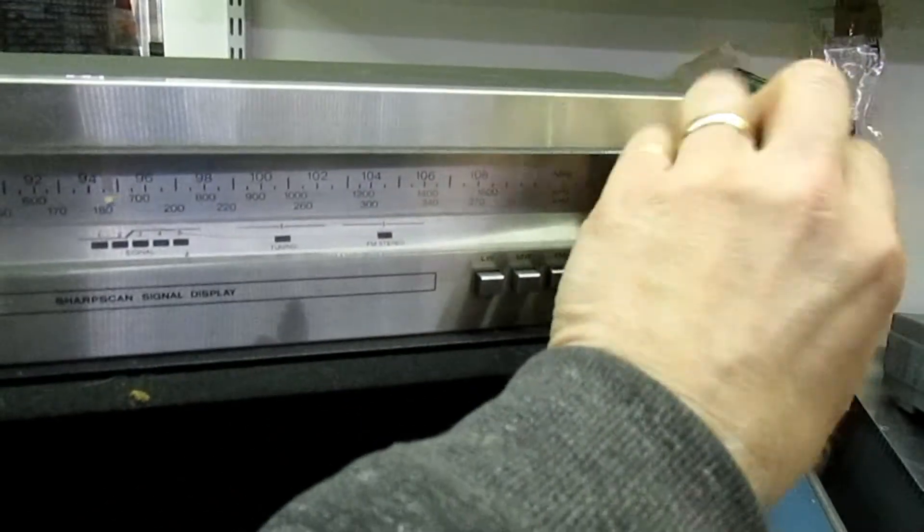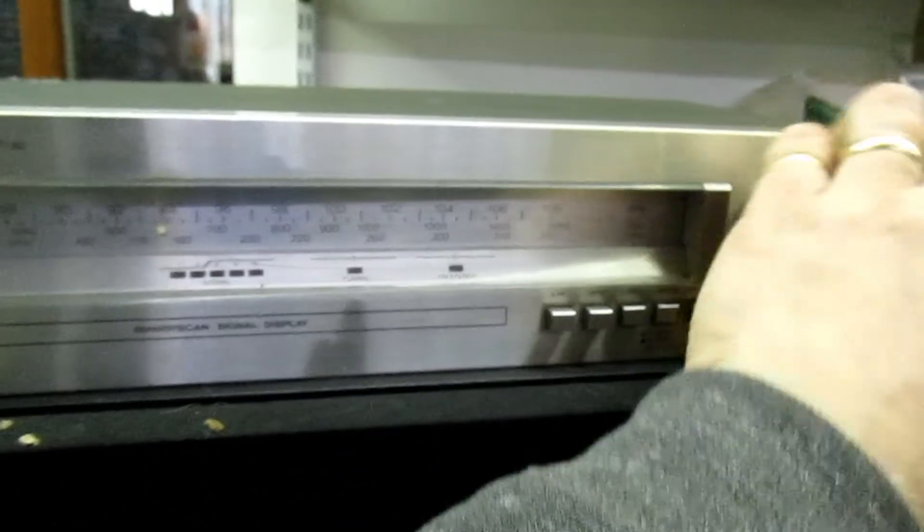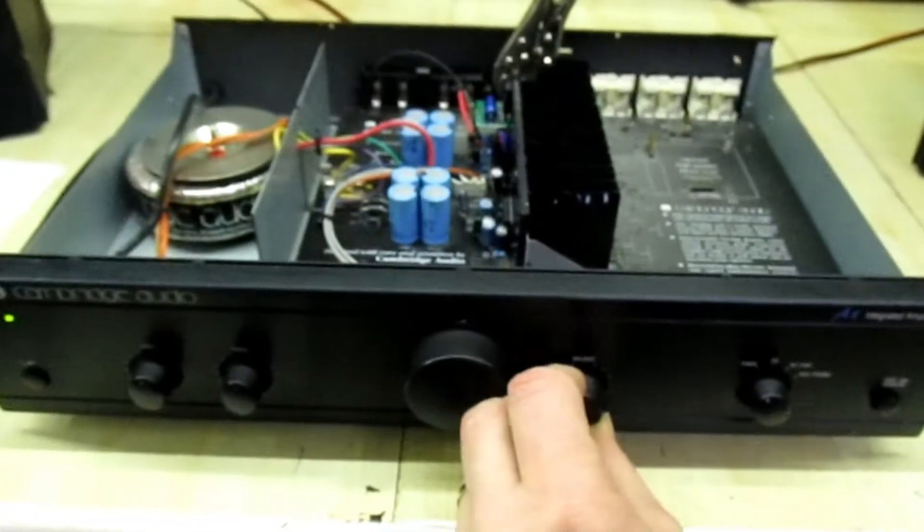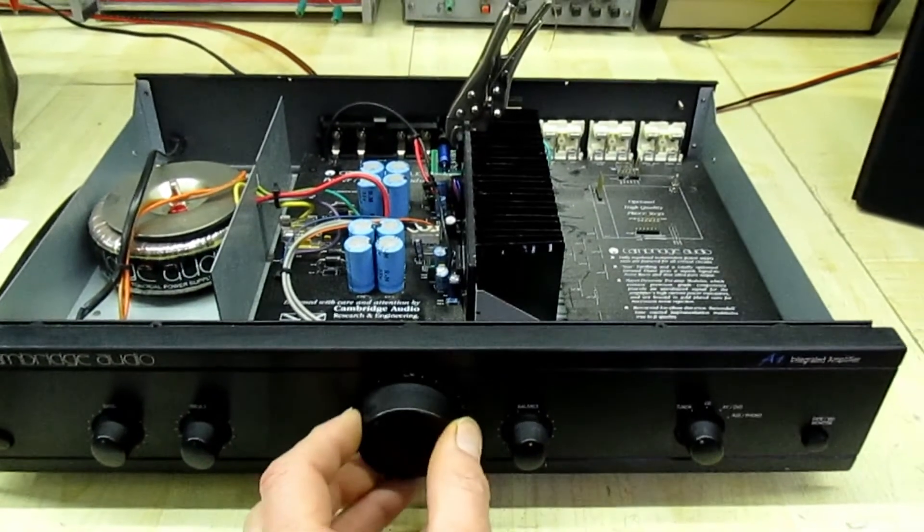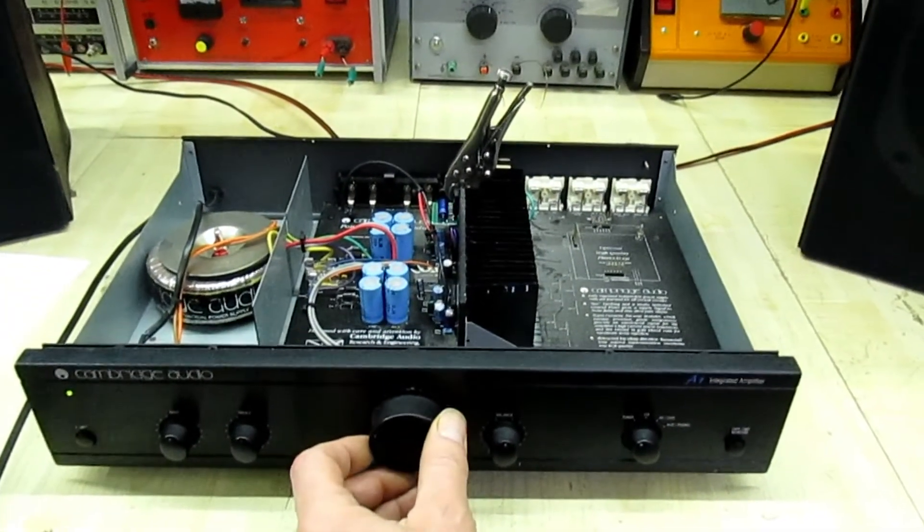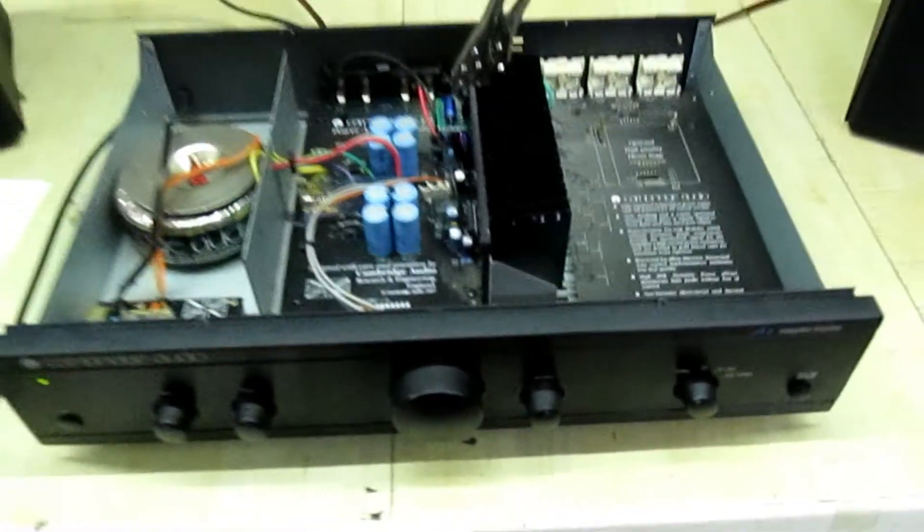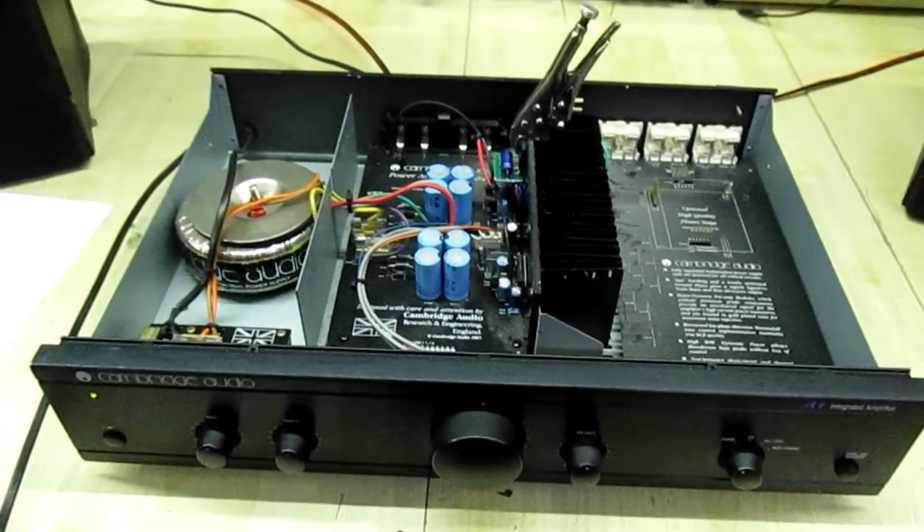And just to show it's all working, we'll turn the balance control. So there you go, that's all working and that's a solution to the problem when you can't get the ICs anymore.